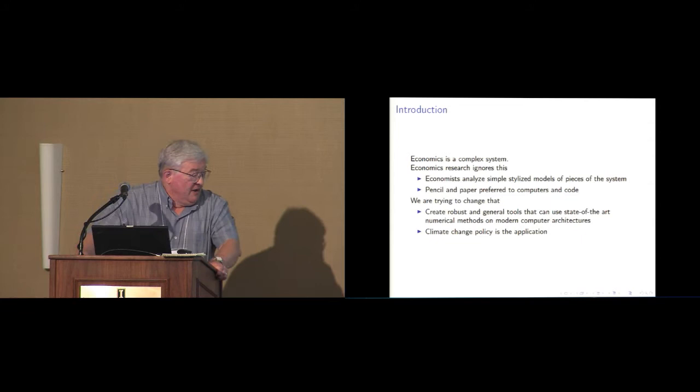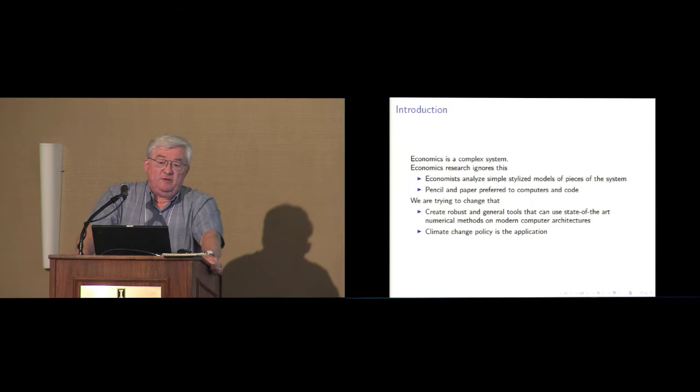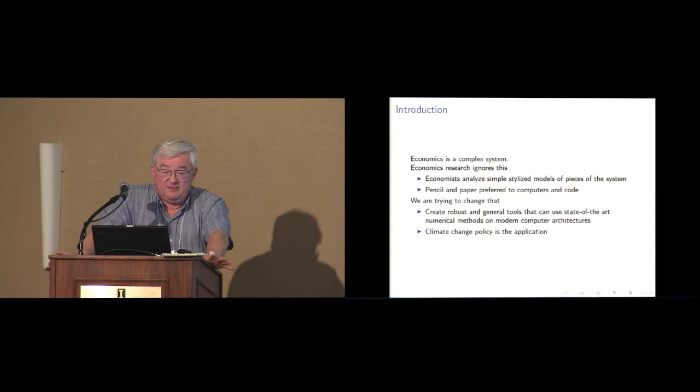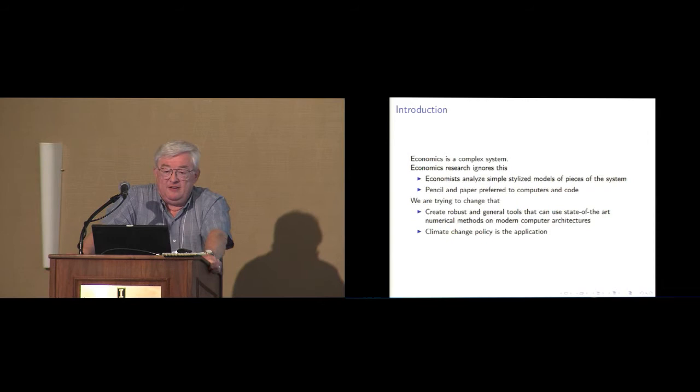We're trying to change that and create robust and general tools for a variety of economics problems. Now, the example that you're going to see today is one that the NSF will give a little money for, having to do with climate change. But basically, that's an application. The tools that we're developing here are related to most of dynamic economics. In particular, young Yang Kai, who does a lot of the programming in his PhD thesis, asked the question, would the economy be better if we got rid of all those derivatives? Should we get rid of them and actually try to measure the value of having them in the marketplace? That's the kind of questions we can start asking now that we have access to the big machines.